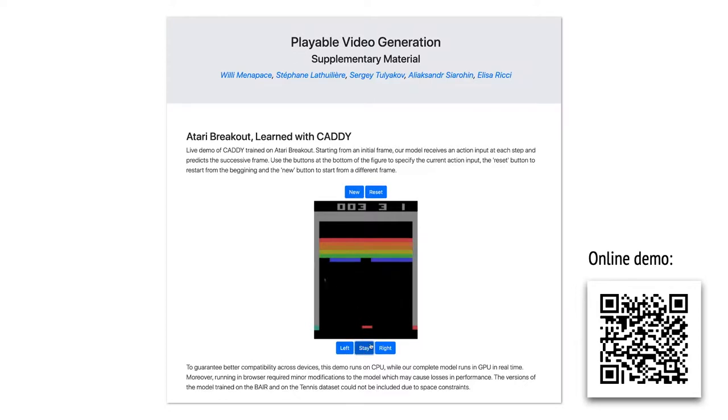First, we play breakout. There are three actions, move left, right, and stay. As the user presses the button, the platform moves accordingly. We can pick a different starting frame by clicking New. The model learned to generate plausible trajectories for the ball. The model learned that the trajectory of the ball is fully determined by the platform, hence it's not affected by actions. The ball can hit bricks, reflect from the walls. One hint to identify that the video is generated is that the score is fixed. The model didn't learn to update it.